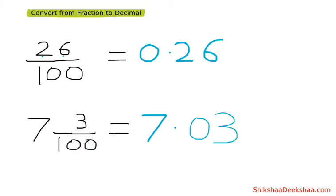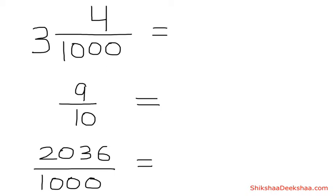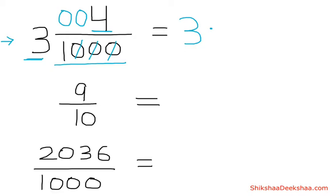Let's take some more examples. We have three and four by thousand. Three is the whole number so we write three as it is, then put a point and convert the fraction part into decimal. We have three zeros at the bottom, so we make four a three-digit number by putting two zeros in front of it — zero zero four. For three zeros we count three digits: one, two, three, then put a point. Our answer is three point zero zero four.